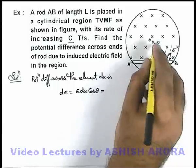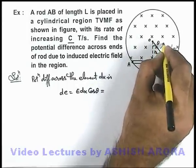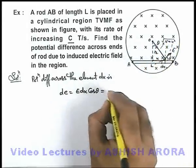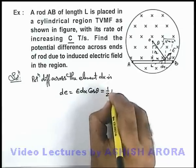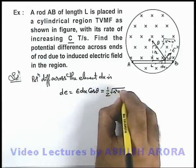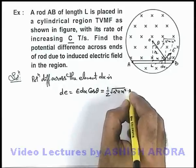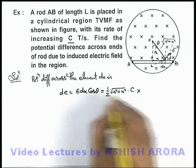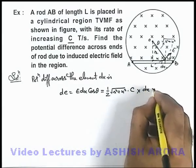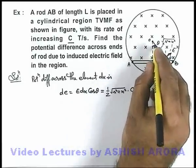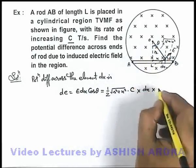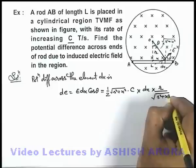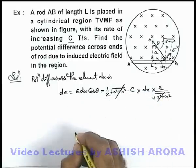The value of electric field inside at a distance, this distance is root of r square plus x square, the electric field we can write as half root of r square plus x square multiplied by dB by dt which is C here, multiplied by dx, multiplied by cos theta which is r divided by root of r square plus x square, which gets cancelled out.